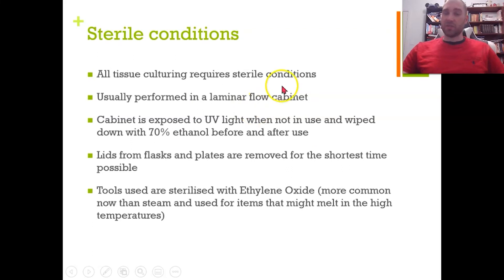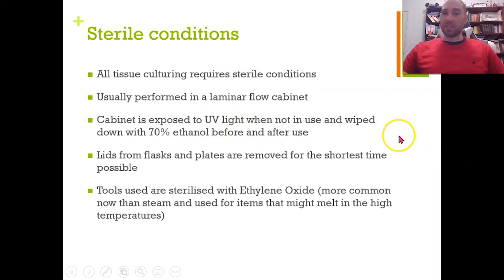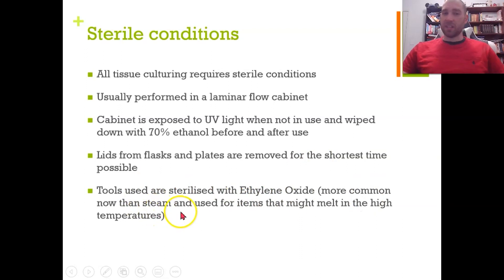A key factor in cell culture technique is sterile conditions. Normally a laboratory technician does this in a laminar flow cabinet, which means only clean air passes over your sample — no bacteria floating in the air or molds. When the cabinet is not in use it is exposed to UV light, which is good at causing mutations and killing microorganisms. It is also wiped down with 70% ethanol before and after use. Lids for flasks and plates are removed for the shortest possible time to limit airflow. Tools used are sterilized with ethylene oxide — we used to use steam, but plastic is cheaper and a chemical that works at room temperature avoids melting things.